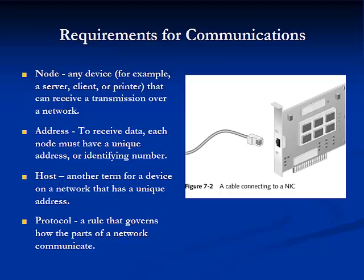Now let's review some basic networking terminology. A node is a device — for example, a server, client, or printer — that can receive a transmission over a network. An address is used to receive data; each node must have a unique address or identifying number, usually called a physical address, or media access control address, or MAC address. This unique physical address is usually encoded into the NIC by the NIC's manufacturer. Host is another term for a device on a network that has a unique address. And a protocol is a rule that governs how the parts of a network work together or interface.